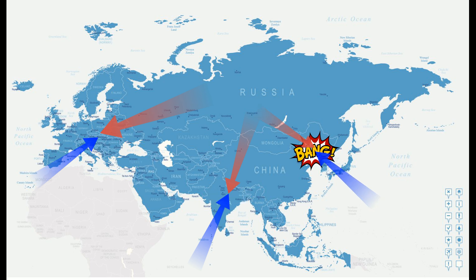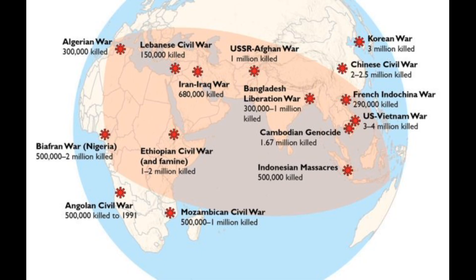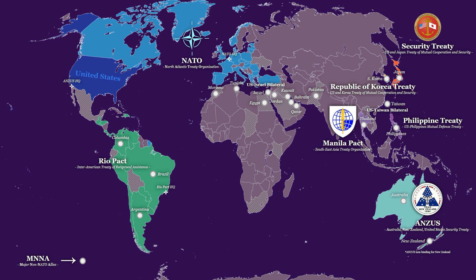Spykman's Rimland Theory recognized that maritime power and the ability to secure alliances along coastal regions could prevent any single power from dominating Eurasia. His ideas significantly influenced U.S. foreign policy during the Cold War, leading to strategies of containment that sought to restrict Soviet influence and prevent expansion into Rimland regions. This shaped numerous military alliances, including NATO and the Southeast Asia Treaty Organization, which established a strategic perimeter around the Soviet Union, aiming to limit its influence and secure key maritime and coastal areas.